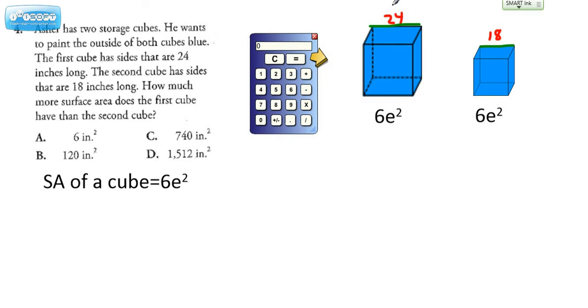So let's apply the formula to this first cube. It's six times 24 squared. Now, we always have to do exponents first, so let's find what 24 times 24 is. And we get this. Let's make that bigger so you can see it.